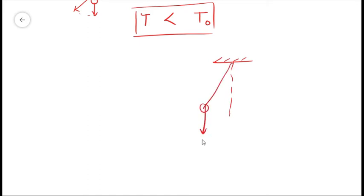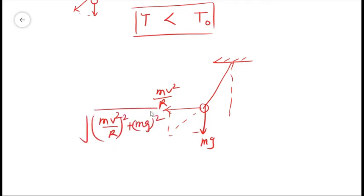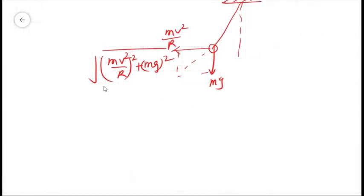mg will be downward and the pseudo force, which is mv²/r, will be in the outward direction. So the resultant will be √((mv²/r)² + (mg)²).